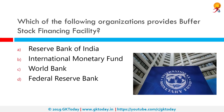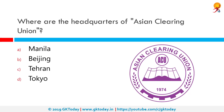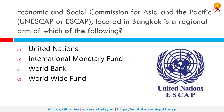Which of the following organizations provides a buffer stock financing facility? The correct answer is the Asian Clearing Union, with headquarters in Tehran, Iran. It was established on December 9, 1974, at the initiative of the United Nations Economic and Social Commission for Asia and the Pacific (UNESCAP).